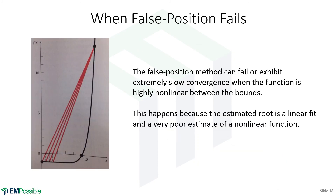The false position method can actually fail when we have a very nonlinear function, where the linear estimate is very poor and we end up way off every iteration. One modification you can add to your code is to track the number of iterations. If it exceeds something like 1,000, revert back to the bisection method by multiplying the blue correction term by zero, which automatically converts the equation to bisection. For very nonlinear functions, this can fail — that's the price we pay for a faster algorithm.